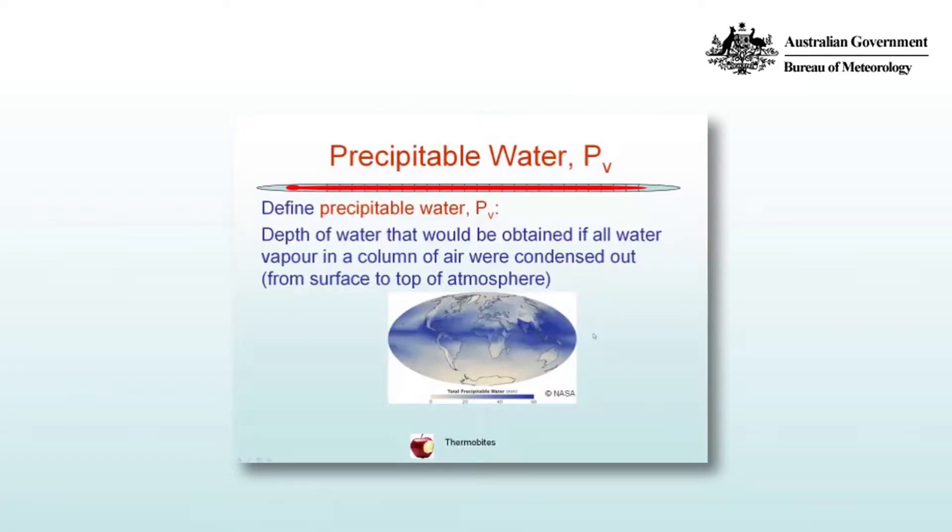Precipitable Water. Precipitable water is a useful quantity in thermodynamics, and we'll talk about its implications and its uses in another video. Precipitable water is defined as the depth of water that would be obtained if all the water vapour in a column of air were condensed out, and that's from the surface to the top of the atmosphere however we might define that.